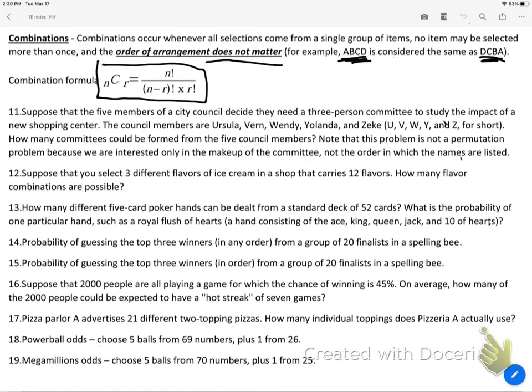Now the hardest thing about this is deciding which is a combination and which is a permutation. Again, let's take a look at this, five members of a city council, three-person committee. Now is it a permutation, is it a combination? It's saying down here that the problem is not a permutation because we're interested only in the makeup of the committee, not the order in which the names are listed. Right, so again, n is going to be five and r is going to be three.